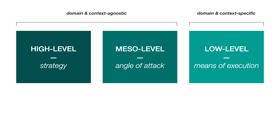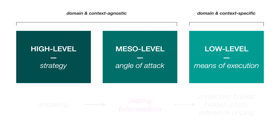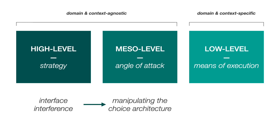Through our evaluation of existing patterns, we found multiple instances where high- and low-level patterns could be united through the creation of a new mesolevel pattern. For instance, the high-level pattern of sneaking and low-level implementations such as sneak into basket could be linked at a mesolevel of abstraction through the pattern hiding information. As another example, a high-level strategy such as interface interference might be used as an angle of attack through manipulation of the choice architecture, which is executed in the interface through false hierarchy.